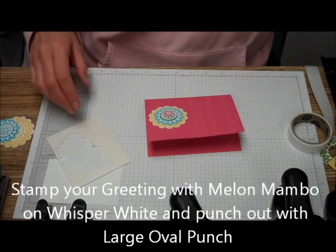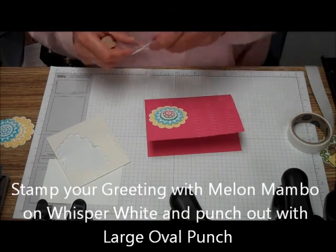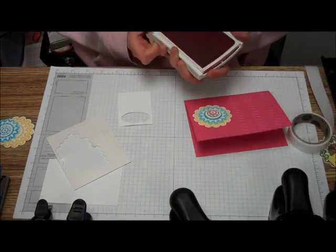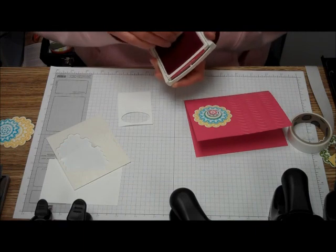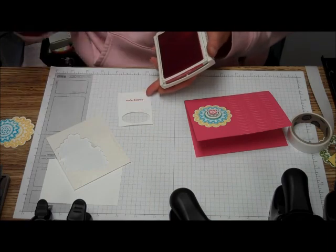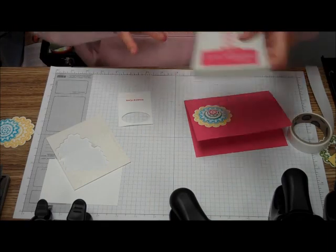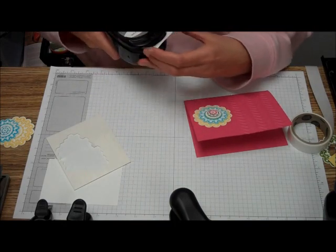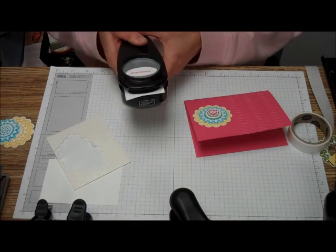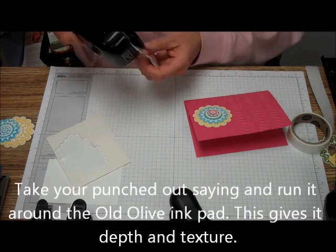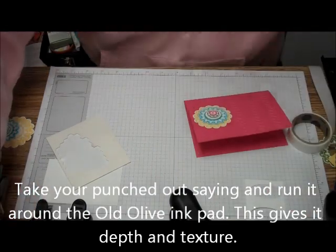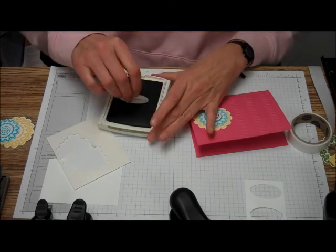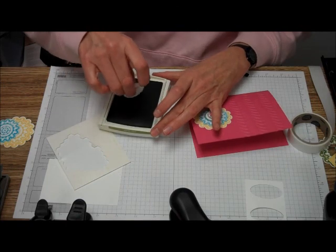Then we're just going to stamp with our Melon Mambo our Thinking of You from Teeny Tiny Wishes. We're going to punch that out. Then we're going to take our Old Olive ink and just roll that around to give it a little more depth and variety.